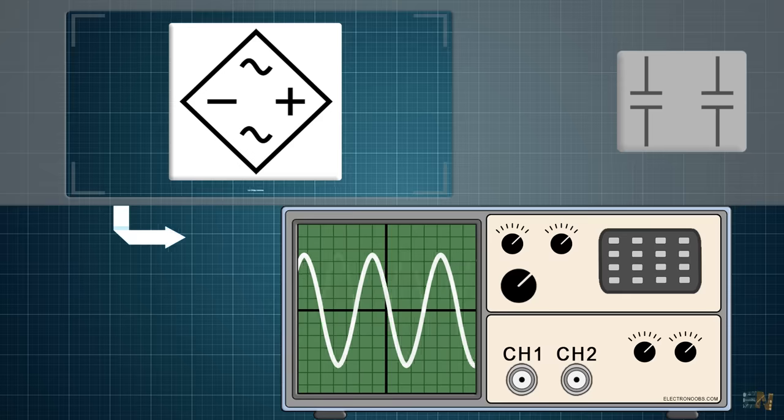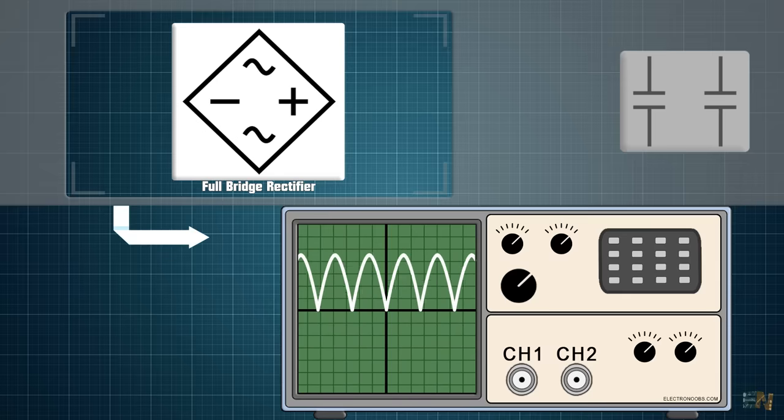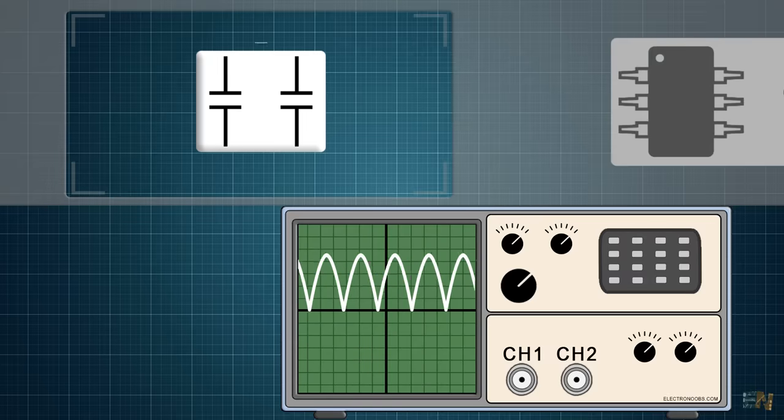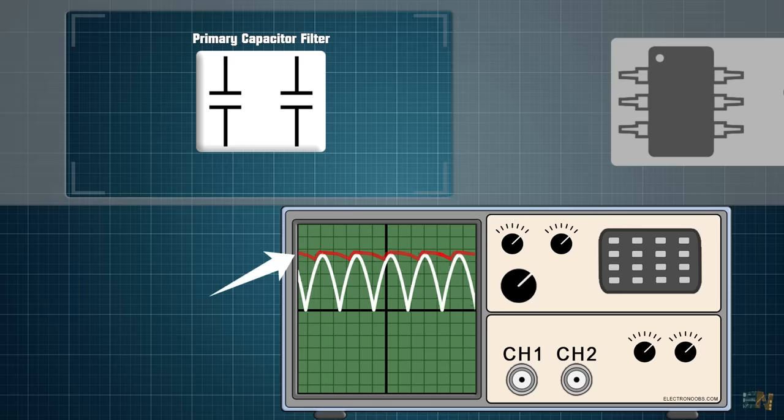Then we pass this signal through the full bridge rectifier and get the signal rectified with only positive waves. To create more or less a DC voltage, we add a filter with some big capacitors. Now this will charge up and create the high voltage DC.